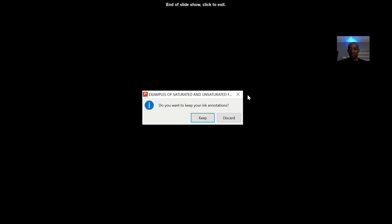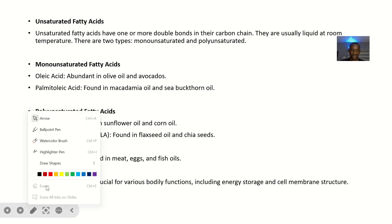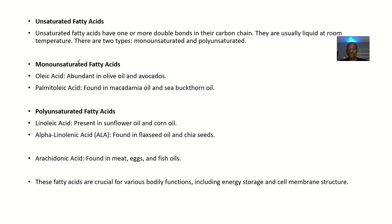For monounsaturated fatty acids, we have oleic acid and palmitoleic acid. Here is the structure of palmitoleic acid, and here is oleic acid. Remember the question only asked for one example — I'm just showing variety. Oleic acid is found in olive oil and avocados; palmitoleic acid is found in macadamia oil and sea buckthorn oil.